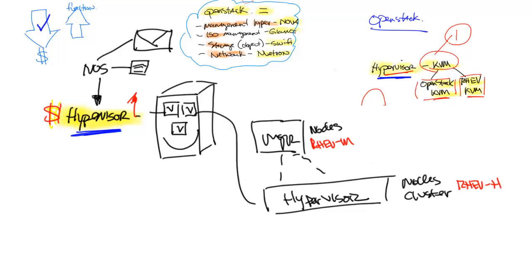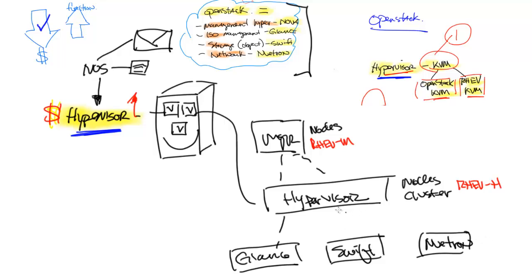From that, those nodes then go down here and talk to the individual components that are doing things within the environment. And we talked about those. Those are listed here. So, we'll just put them in here. Glance, Swift, and Neutron. Now, notice I only listed the three here at the bottom, but I didn't list management, because we have management.